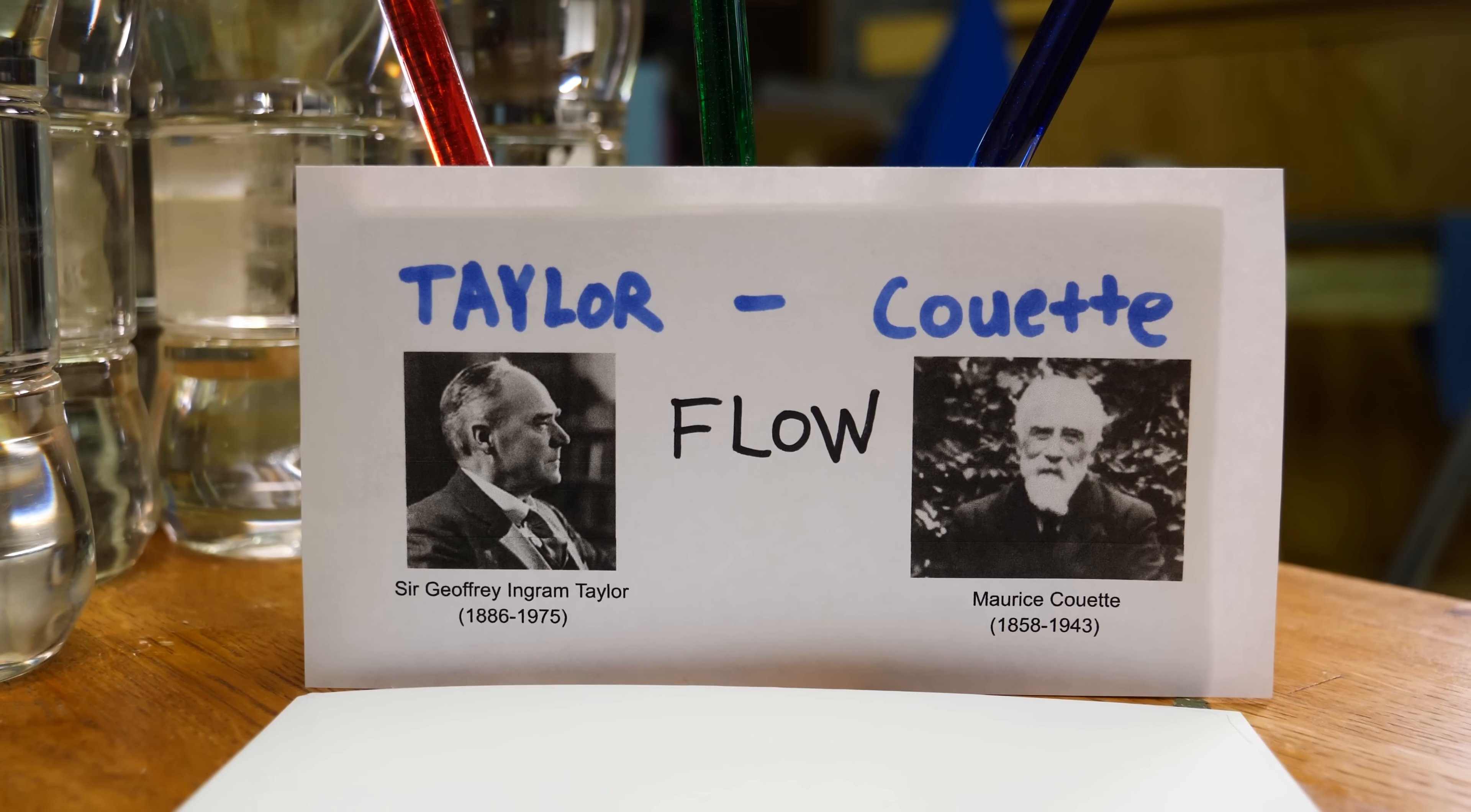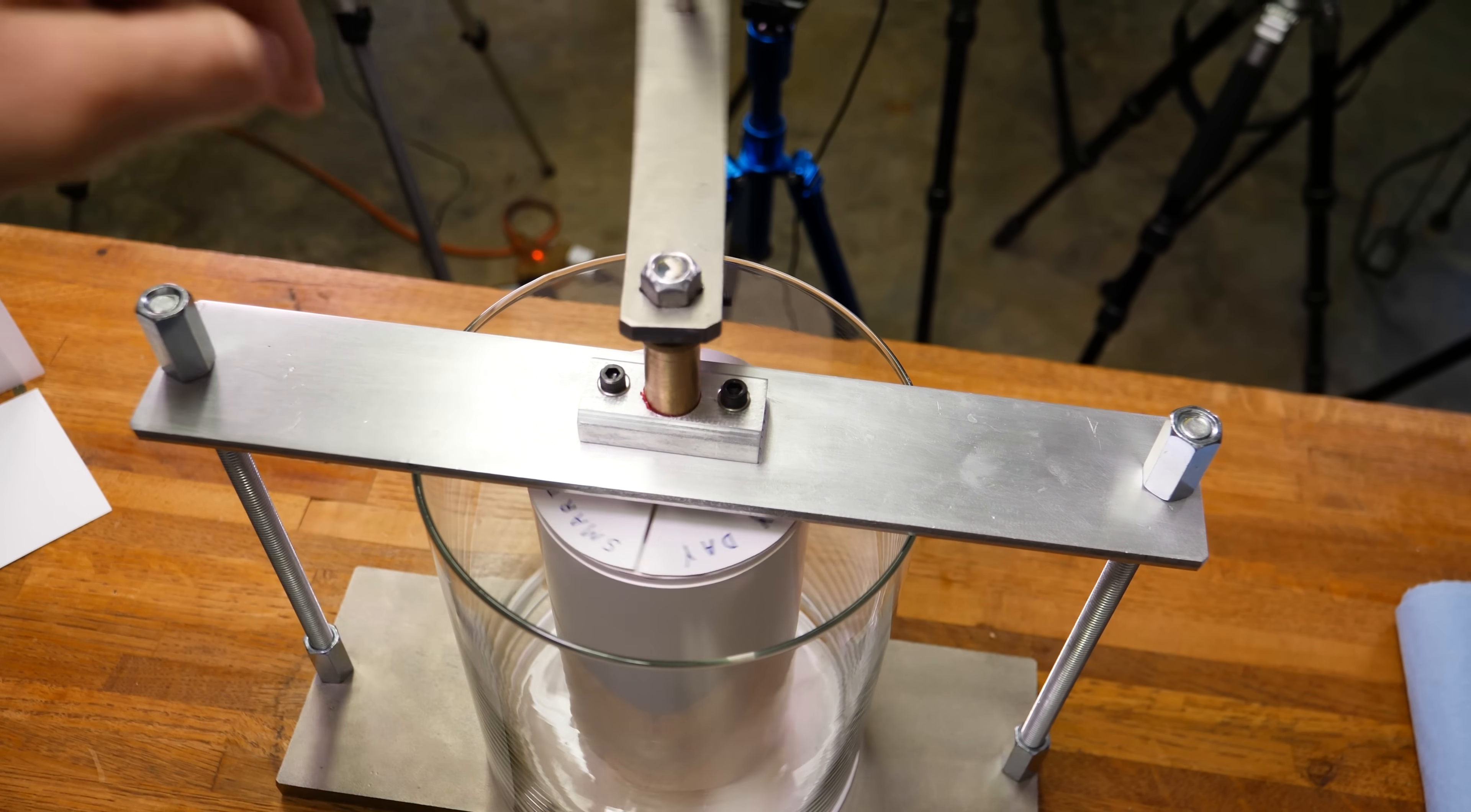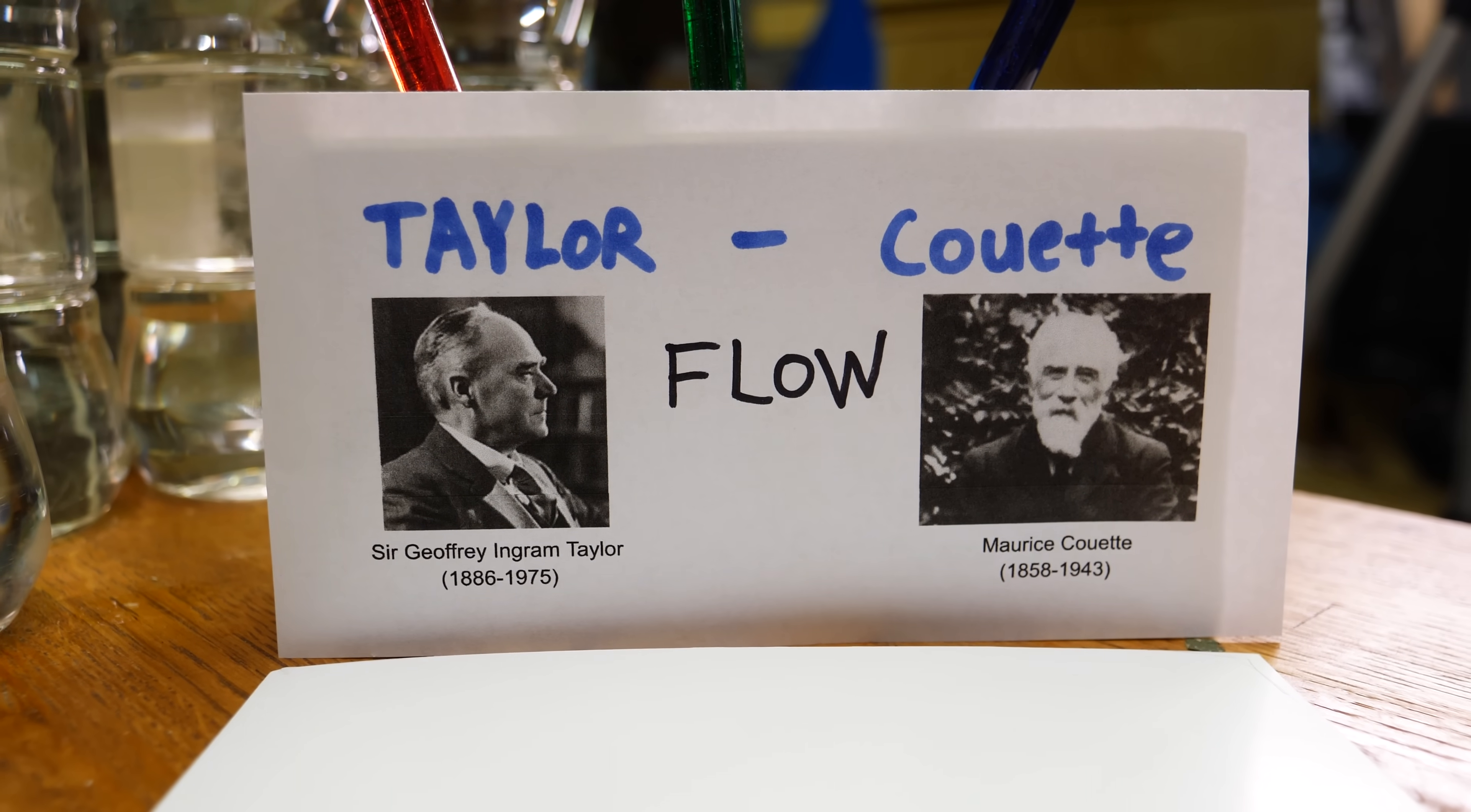We're gonna look at something called Taylor Couette flow. My man here Maurice Couette, French guy, he came up with a device so that you could quantify the viscosity of a fluid by a cylinder rotating on the inside of another cylinder. It's really cool work. My dude here Sir Taylor, he expanded on Couette's work and he measured stability inside Couette flow. So you combine the two, you get Taylor Couette flow, what we're gonna look at today.